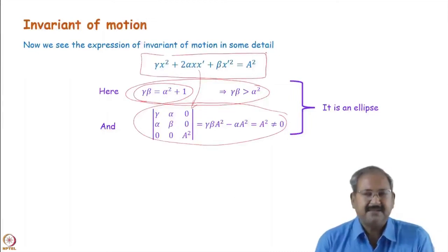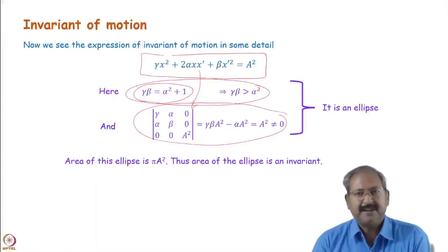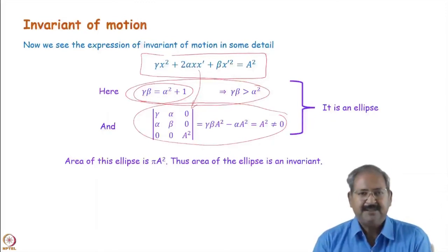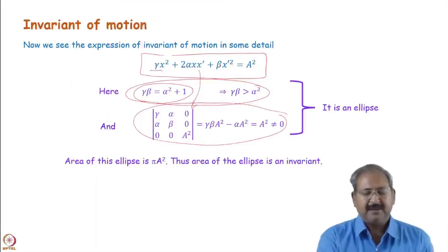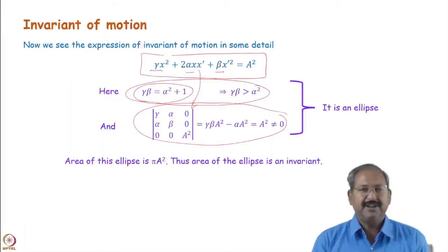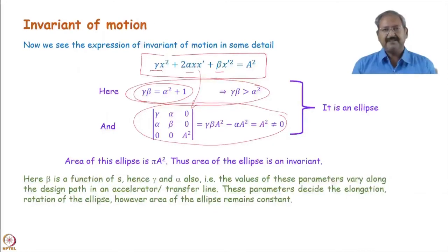As in the case of a simple harmonic oscillator, we obtain an ellipse in x and x-prime. The area of this ellipse is pi times a-squared, and a-squared is invariant — meaning the area of this ellipse is constant throughout the propagation of the particle in the entire optics. Due to variation in gamma, alpha, and beta, the orientation and elongation of this ellipse may change, but the area remains the same. This is a remarkable result in beam physics.